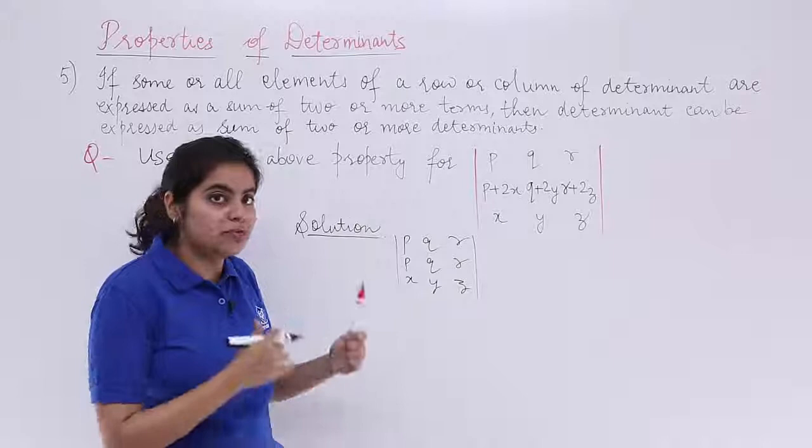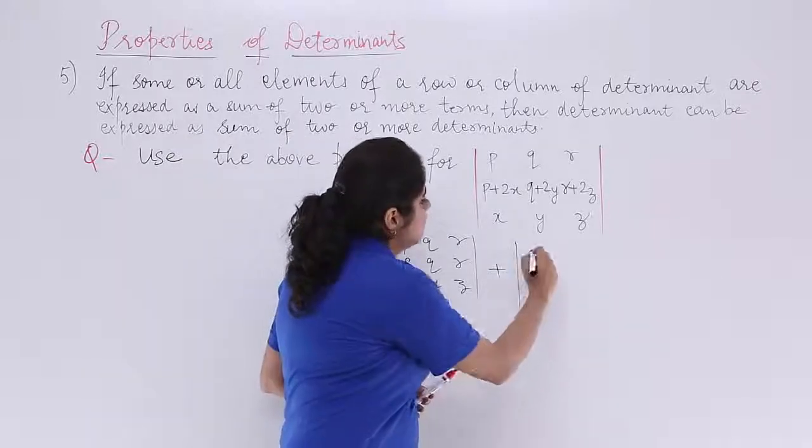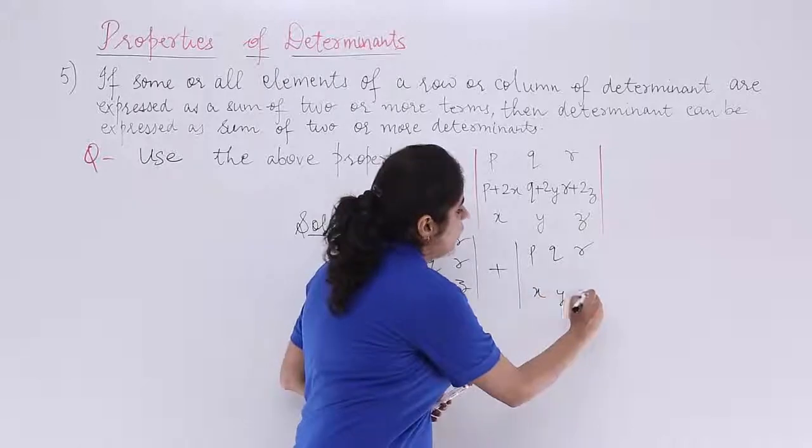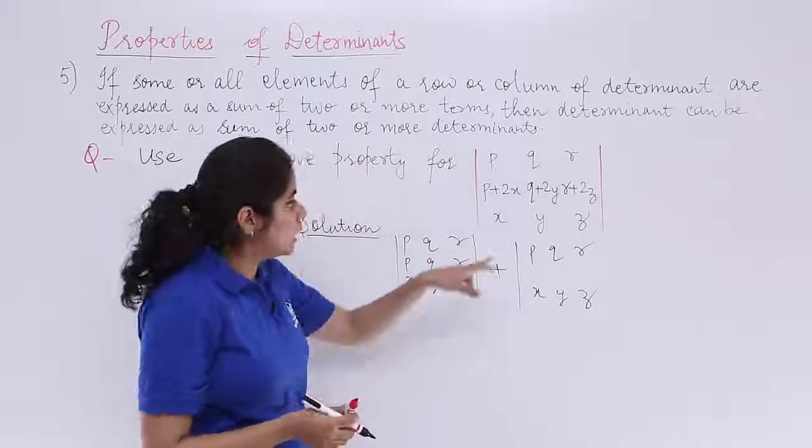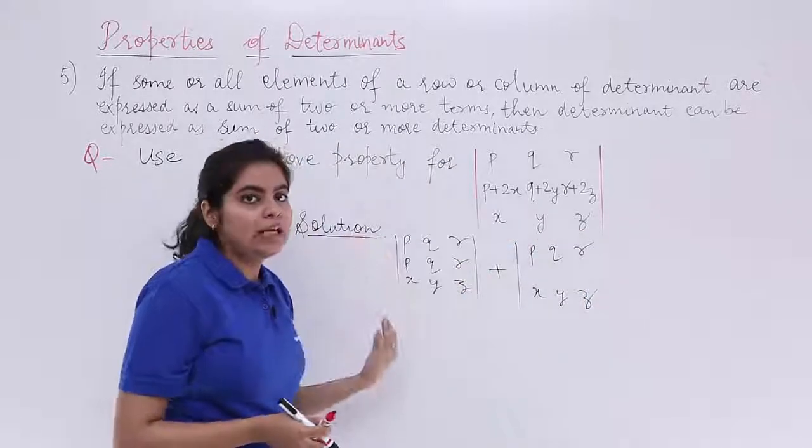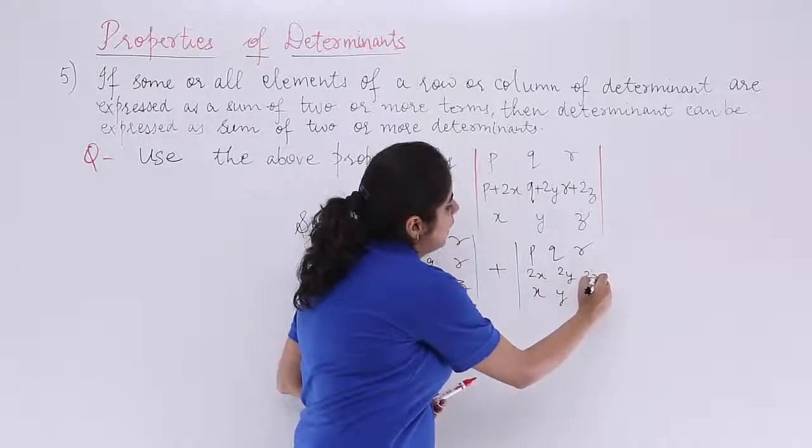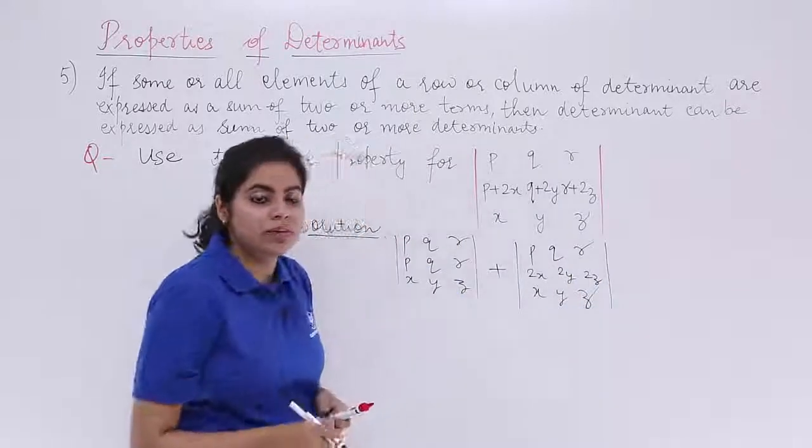PQR will be going in the first determinant. In the second determinant, you have the first row intact. You have the third row intact. What is it? Right?